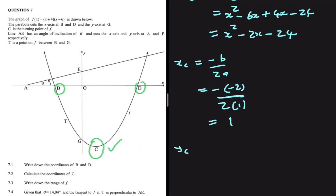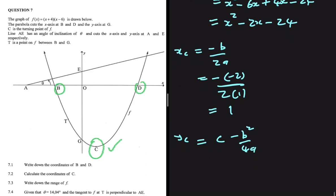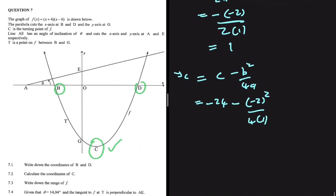Now for the y-value of C — this is what I was referring to. We actually have a formula for that. We can substitute back into our equation, but we don't have to. The formula is c minus b² divided by 4a. The constant c is -24, and b is -2. So we have -24 minus (-2)² divided by 4(1). That gives -24 minus 4 divided by 4, which is -24 minus 1, giving us -25.